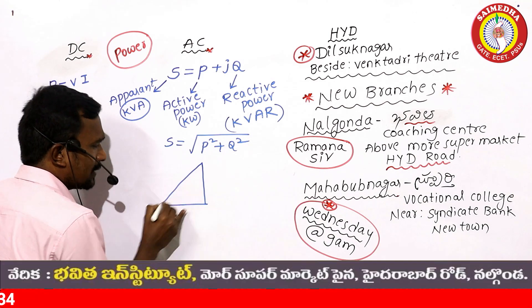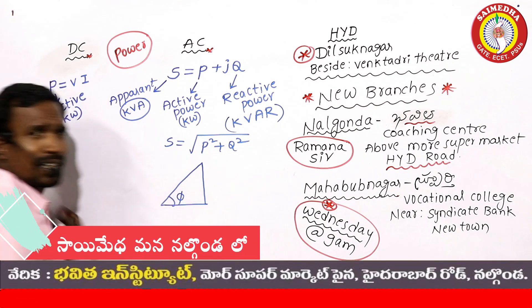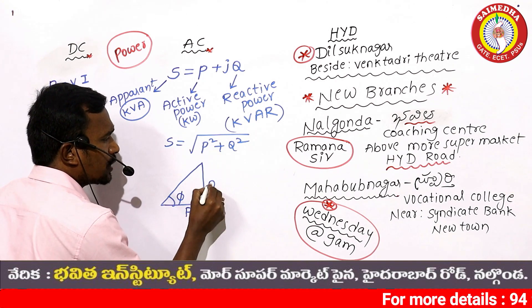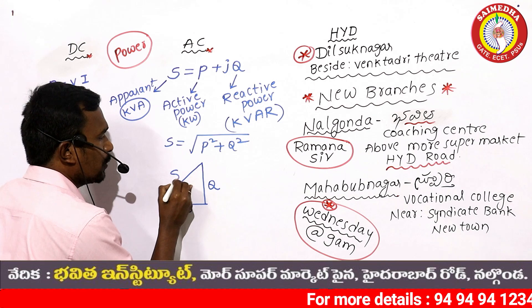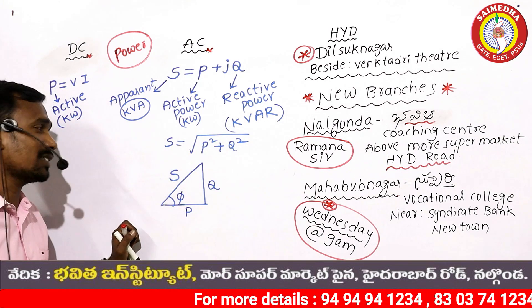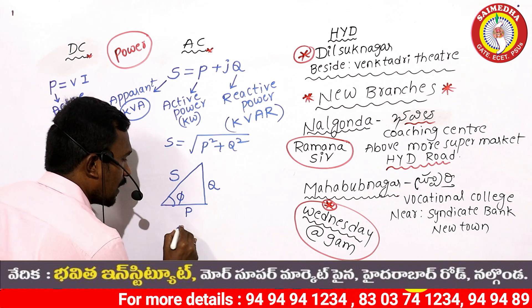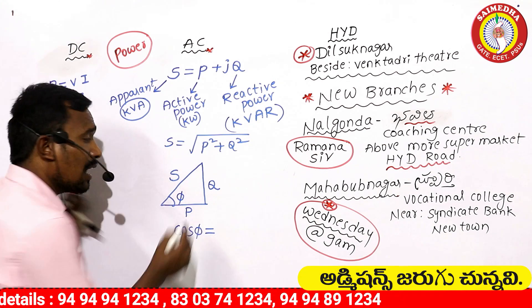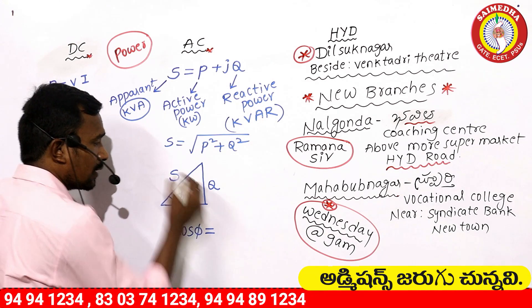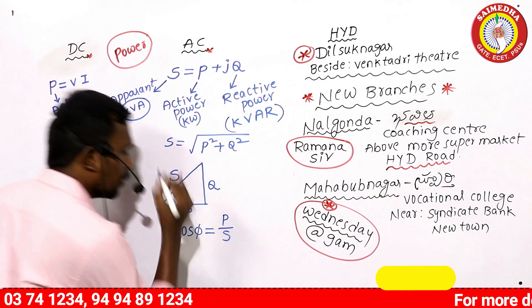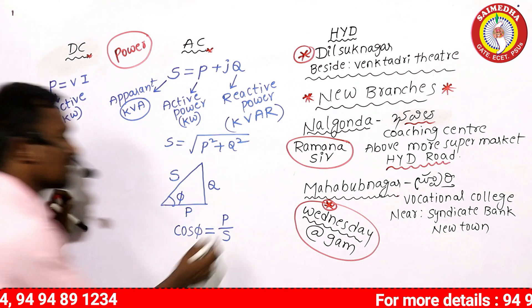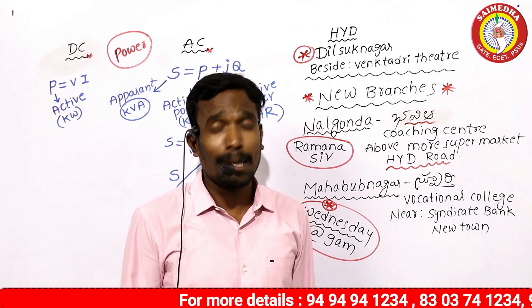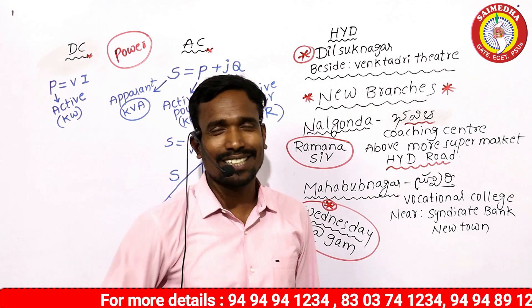This is the power triangle. This is the power factor angle φ. P is the base, Q is the perpendicular, and S is the hypotenuse. Cos φ equals P by S — that is the power factor.